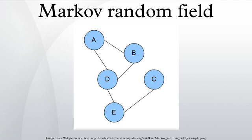In the domain of physics and probability, a Markov random field, Markov network, or undirected graphical model is a set of random variables having a Markov property described by an undirected graph.